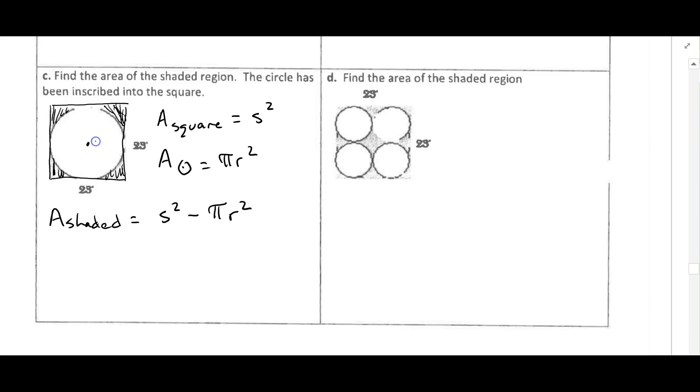The only thing that we need to do here is find the radius of the circle. We can see that the radius goes from the center of the circle, which is also the center of the square, to the circle and square. It's going to have to be half of the side of the square. Since the side of the square is 25, this radius is going to be 12.5. Now we have all the information we need.